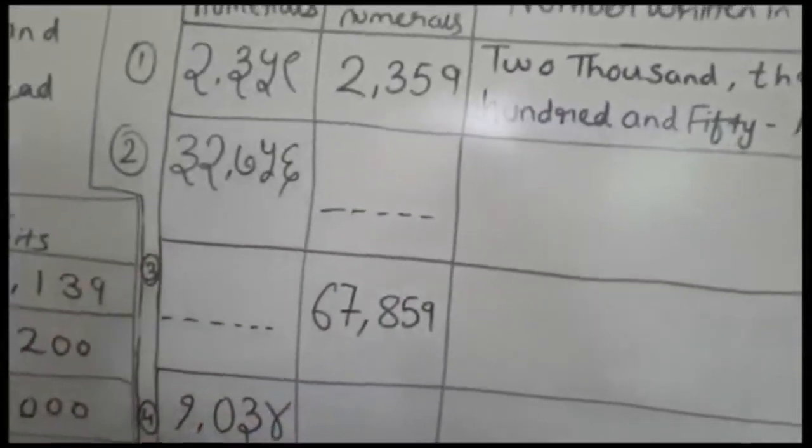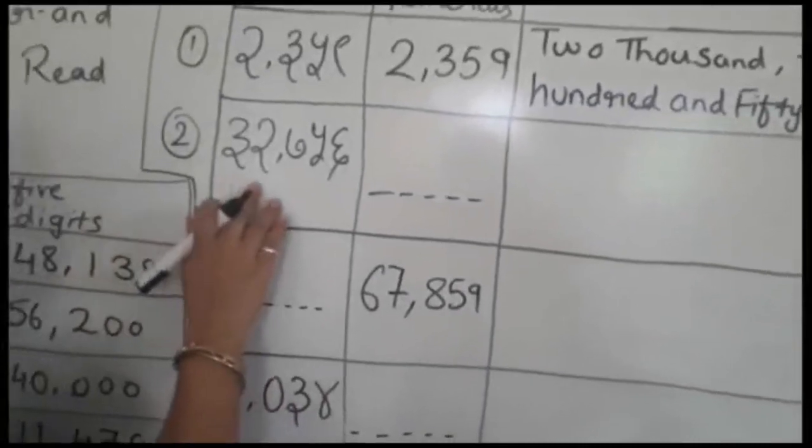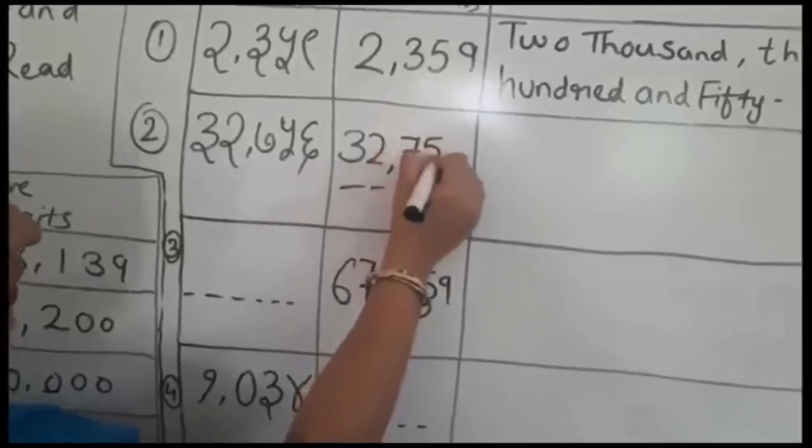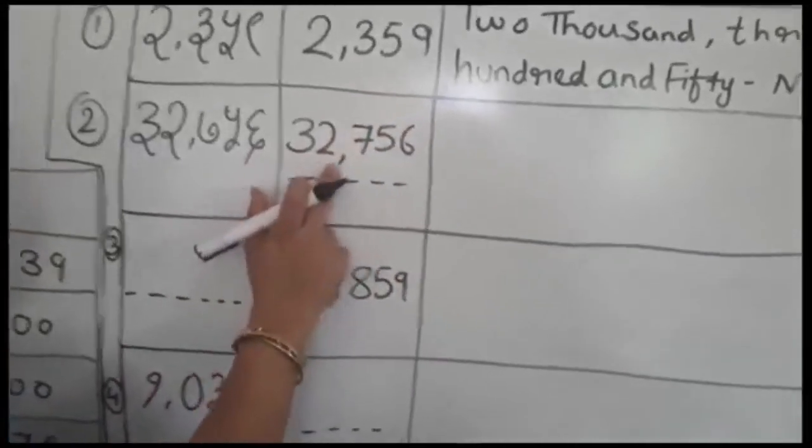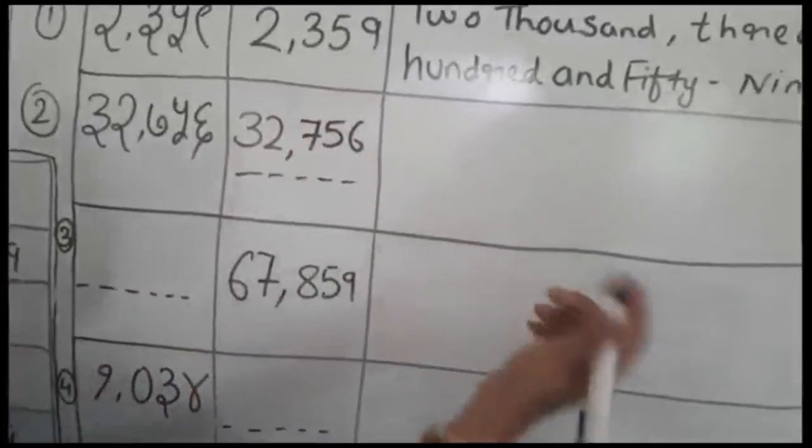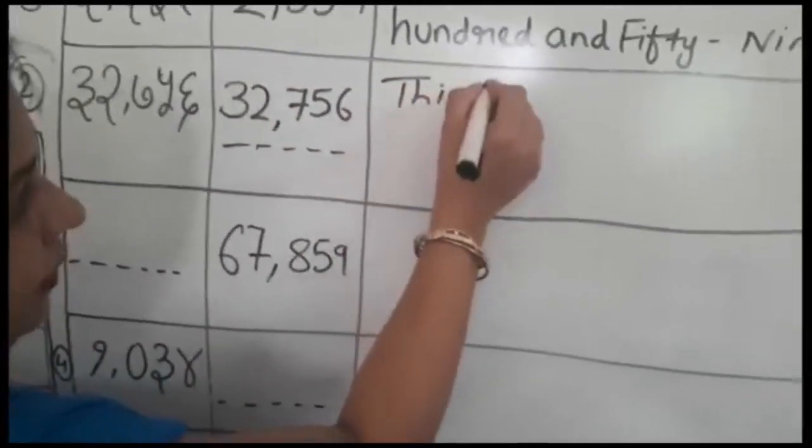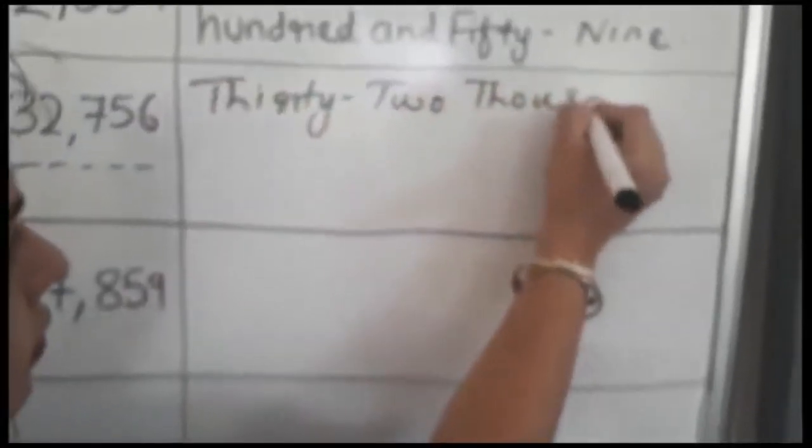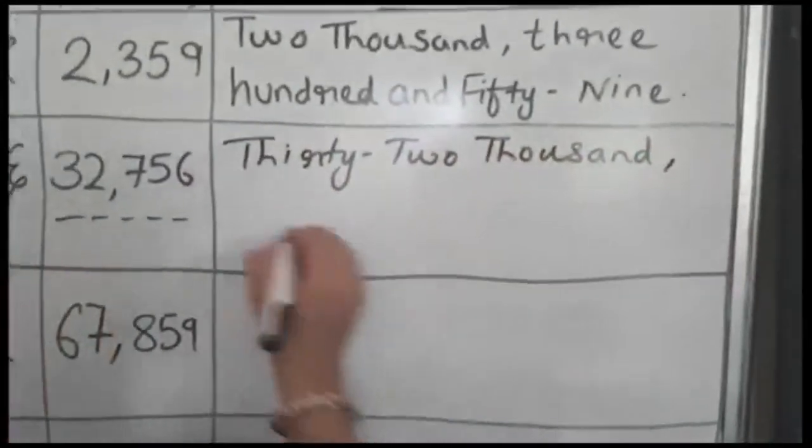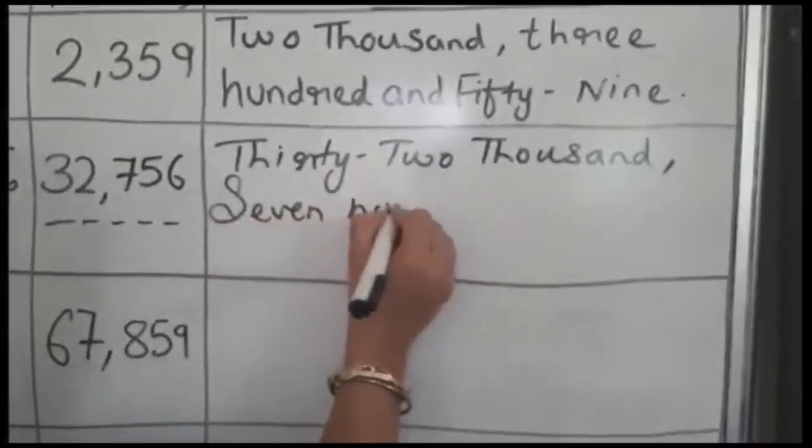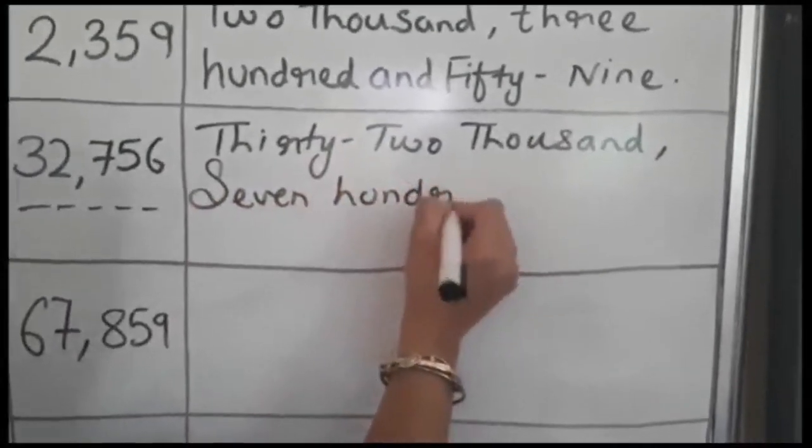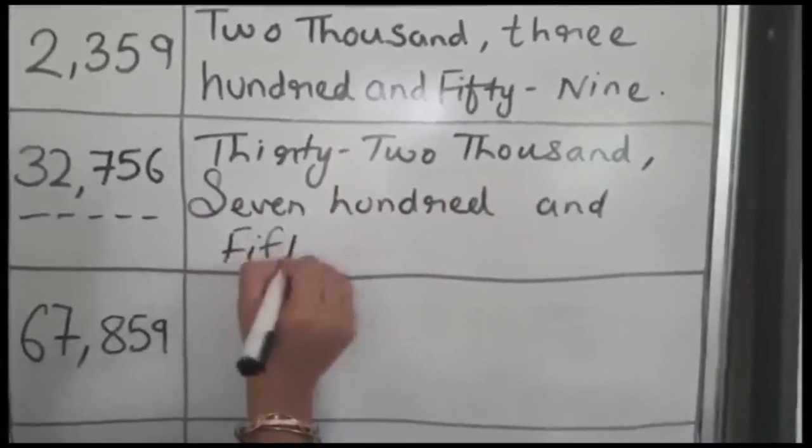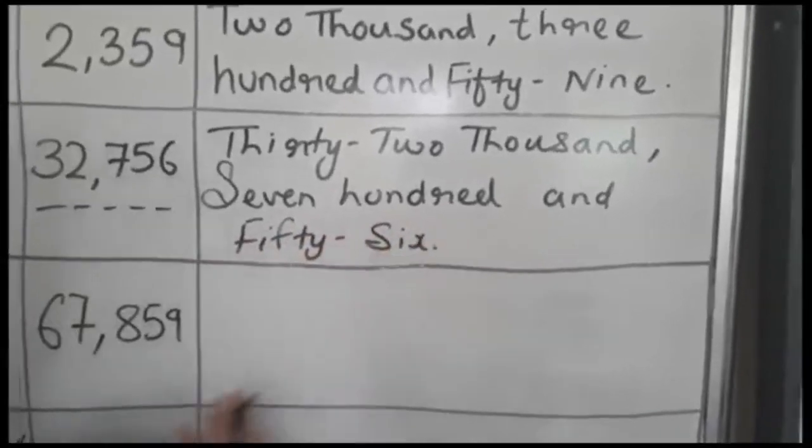Next we have to fill. Here, 32,756. In words, same way we have to write: thirty-two thousand, seven hundred and fifty-six.